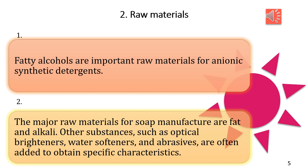Besides the basic chemical reaction for making soap and detergents, there are raw materials involved in manufacturing detergents. Fatty alcohols are important raw materials used for the manufacturing of anionic synthetic detergents. Examples of anionic detergents include sodium lauryl sulfate and sodium dodecylbenzene sulfonates. They are called anionic detergents because the alkyl benzene portion of the anion is lipophilic while the sulfonate portion is hydrophilic. Alkyl benzene sulfonates are widely used but are poorly biodegradable.